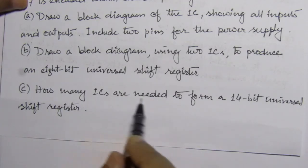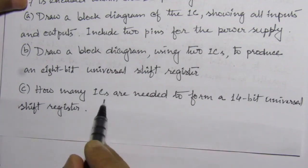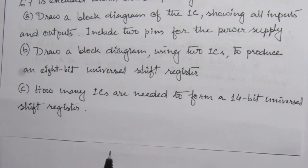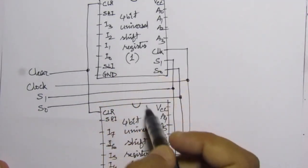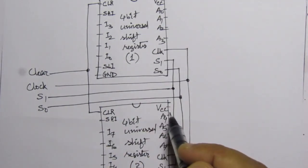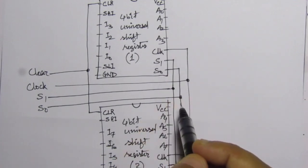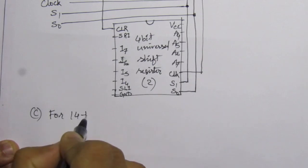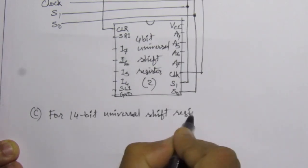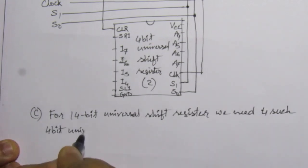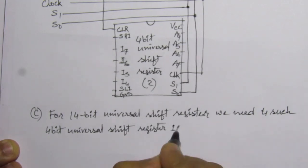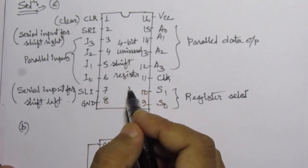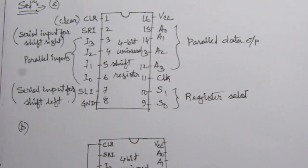In the third part, we need to find how many ICs are needed for a 14-bit universal shift register. Since each IC handles 4 bits, 2 ICs give an 8-bit register, 3 ICs give a 12-bit register, and 4 ICs give a 16-bit register. Therefore, for a 14-bit universal shift register, we need 4 such 4-bit universal shift register ICs.